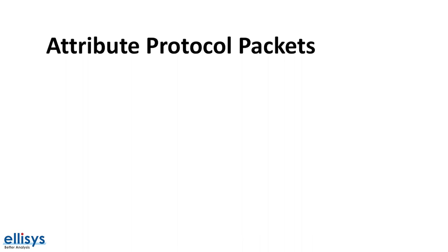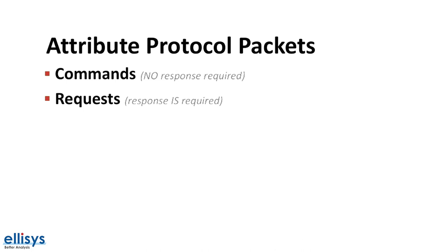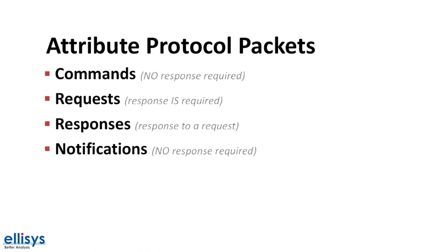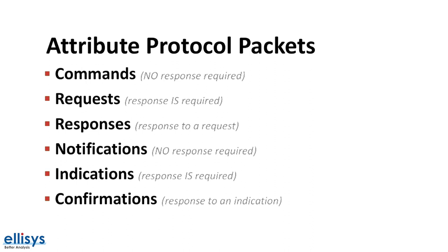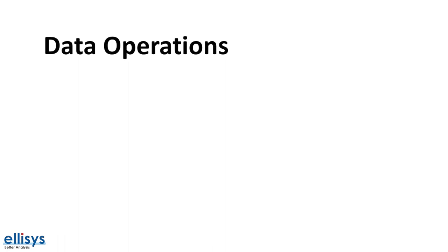Let's look at the different types of attribute data operations. There are different types of attribute protocol packets. They include commands, which are sent by the client to the server; requests, which are also sent by the client to the server but require a response; and responses, which are sent by the server in response to a request. We also have notifications, which are sent by the server to the client to indicate that a specific characteristic value has changed — the client must first enable notifications for that characteristic. A notification does not require a response from the client. Indications are similar to notifications, except they require an acknowledgement from the client confirming the indication was successfully received. Confirmations are the acknowledgement packets sent by the client back to the server in response to an indication.